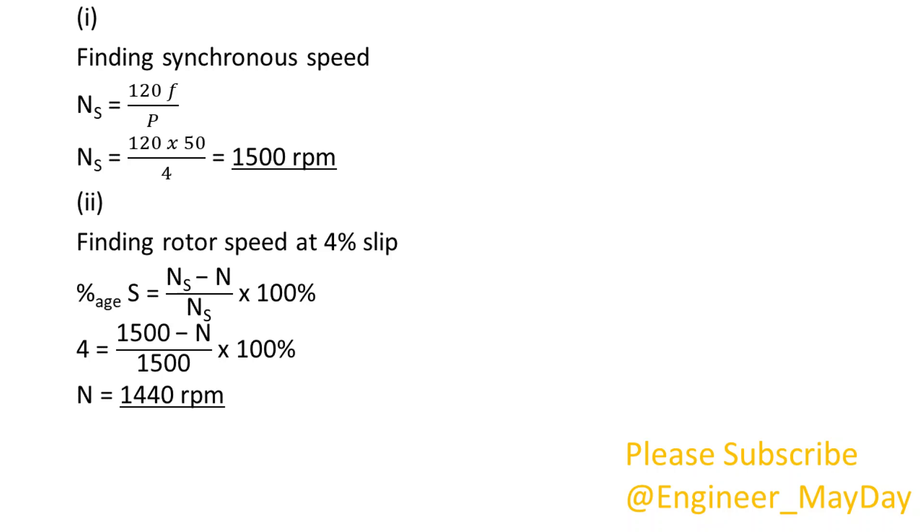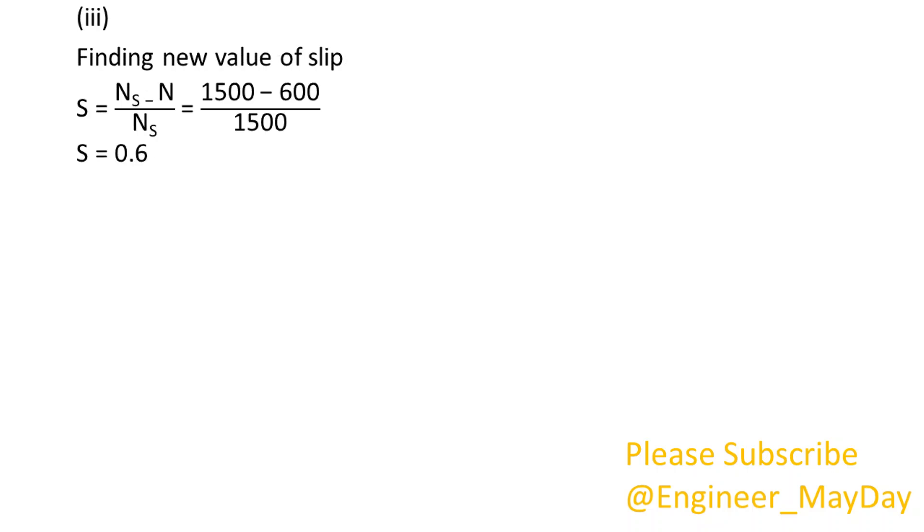Finding rotor speed at 4% slip: N equals 1440 RPM. Finding new value of slip: S equals 0.6. Finding rotor frequency F prime: F prime equals 30 Hz.